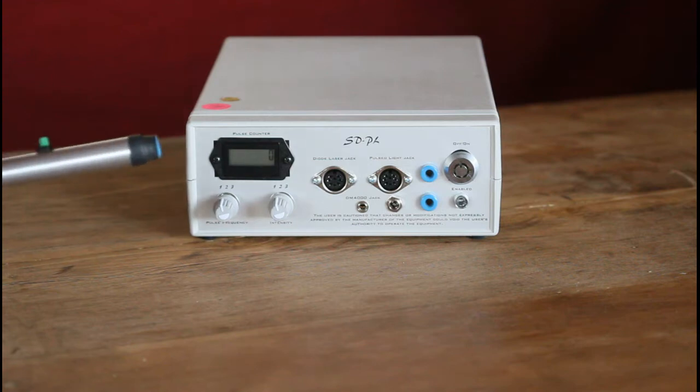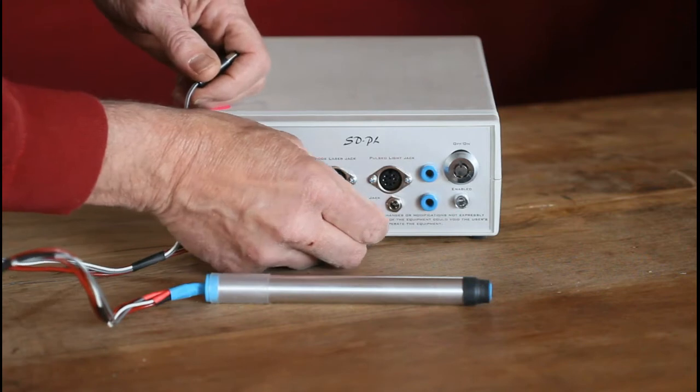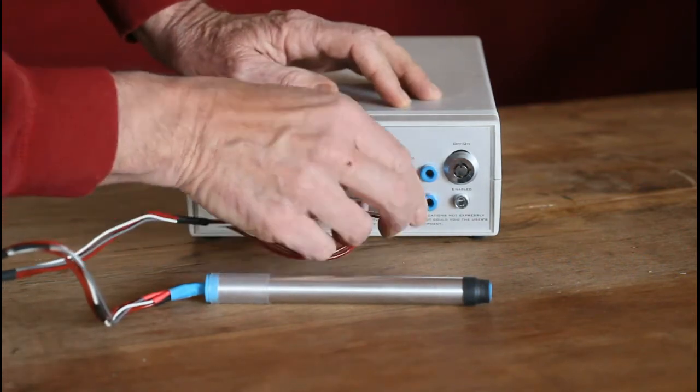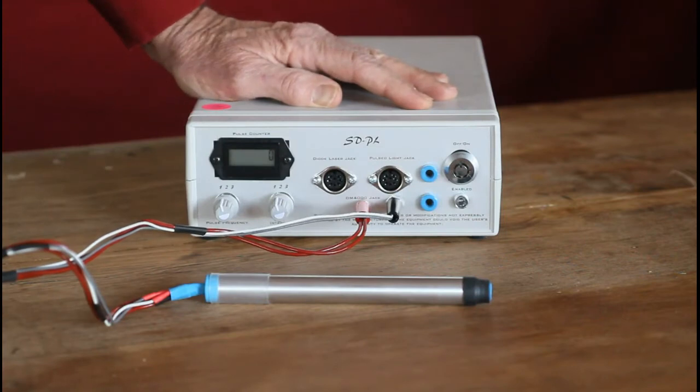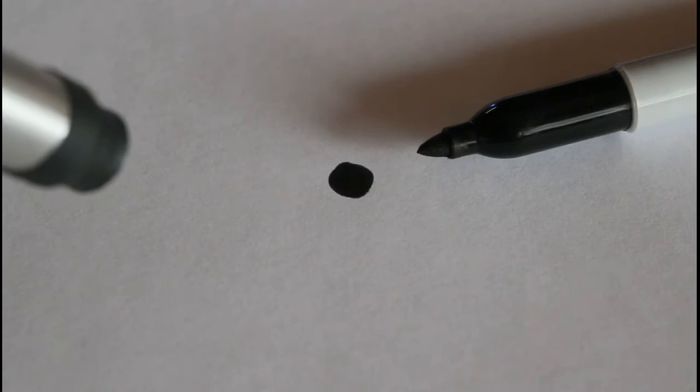The first handpiece is called a pinpoint laser and it's the same handpiece that is used in our DM4000 personal hair removal system. It delivers up to 54 joules of energy per square centimeter per second in the form of a precision beam with a diameter of one millimeter.